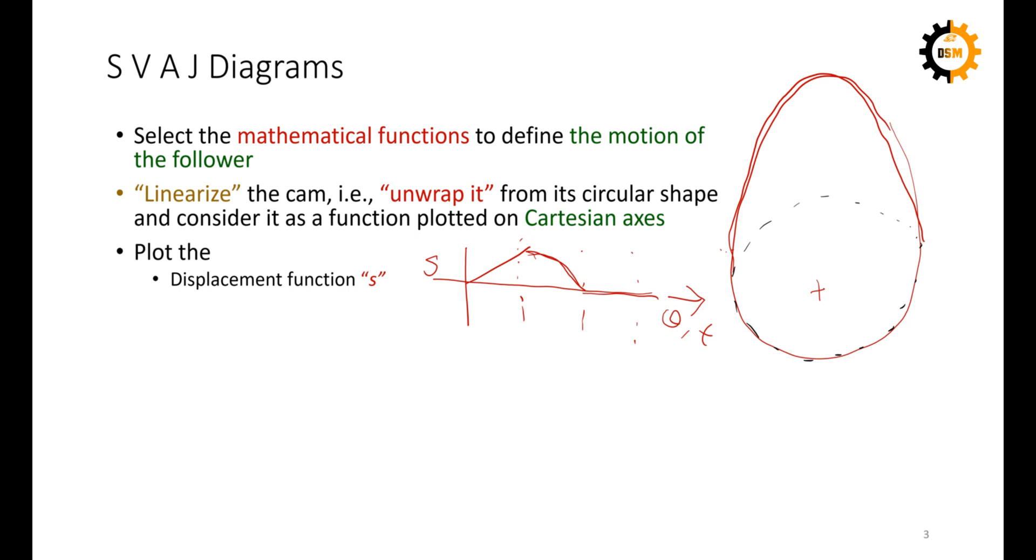This profile basically is coming from unwrapping the CAM circular motion, and this is over and above the base circle. Similarly, we take the derivative of this displacement function and make the velocity curve, and similarly the velocity has its derivative to give the acceleration of the CAM when the CAM follower mechanism is rotating.